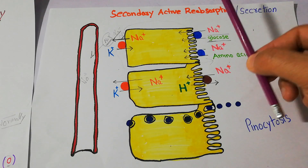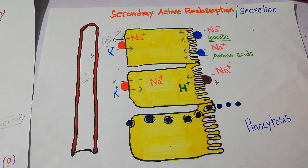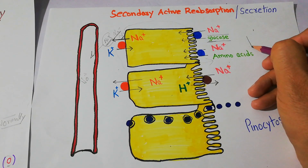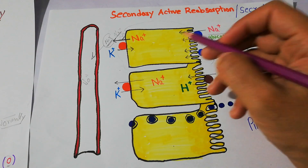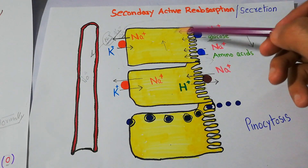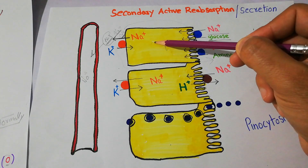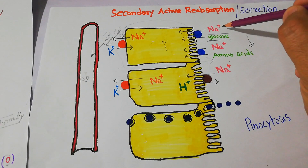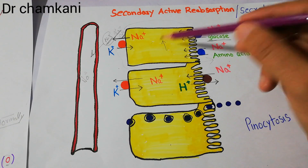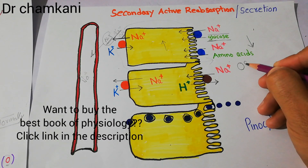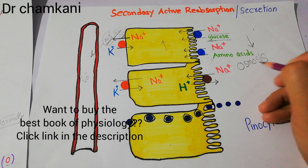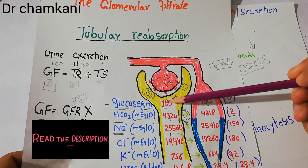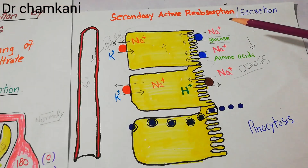Whenever the concentration of sodium increases on one side and decreases on the other, water will move from the area where the concentration of solute — especially sodium — is low, to a region where the concentration of sodium is high. So when there is a decrease in sodium, sodium moves inside the cell and its concentration increases there. Water then moves from the region where sodium concentration is low to the region where sodium concentration is high. This process — osmosis — is responsible for water reabsorption from the proximal tubule into the peritubular capillaries.